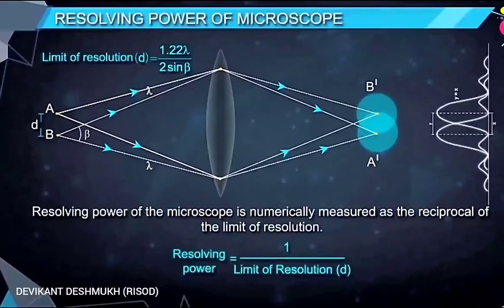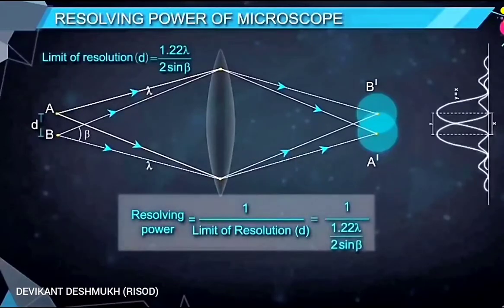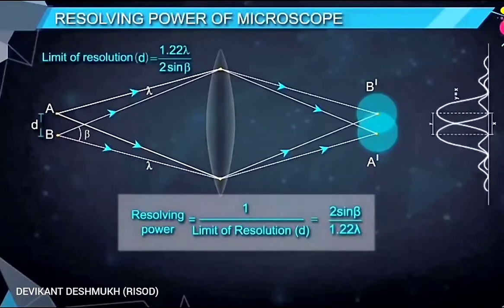The resolving power of microscope is numerically measured as the reciprocal of limit of resolution. Therefore, resolving power is equal to one upon limit of resolution small d and it is equal to two sine beta upon one point two two lambda.